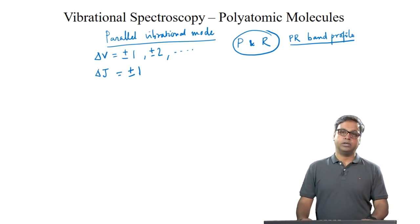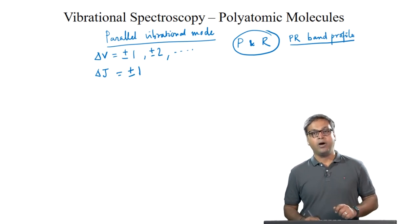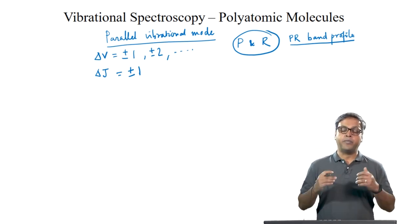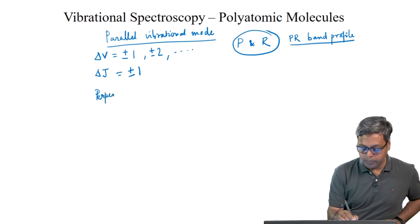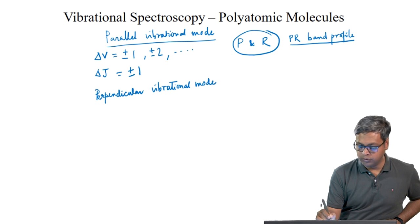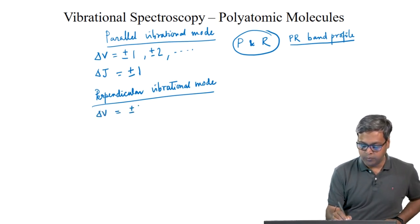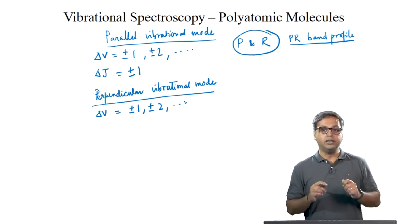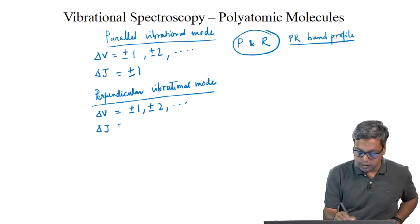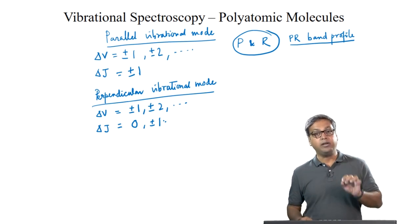For a polyatomic system it is possible to have a perpendicular mode. What difference does this perpendicular mode make to the selection rules? For the perpendicular vibrational mode, the selection rule is ΔV = ±1, ±2, and so on, but the main difference is that ΔJ = 0, ±1. So for the perpendicular vibrational mode, ΔJ can equal 0.